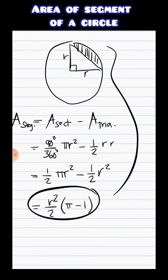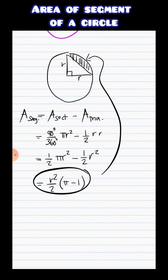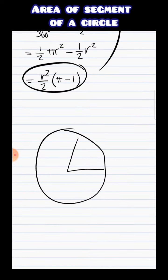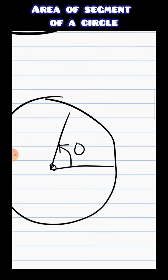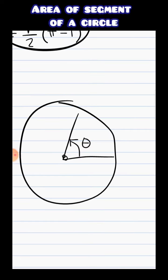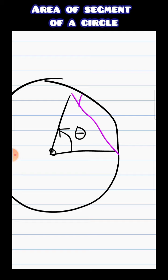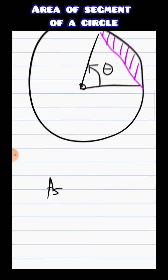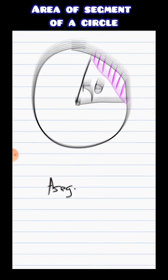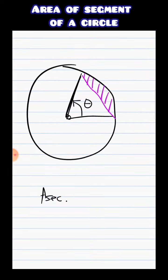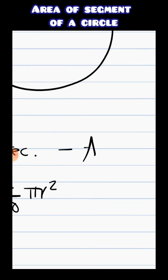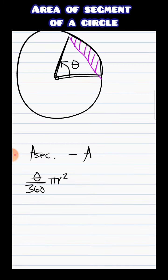This is the area of this segment right here. So just find the area of the sector and then subtract the triangle. Now, how about if we have a circle and a segment — or a sector — that has an angle not equal to 90 degrees, something like this one? How are we going to find this segment? Well, the first step is still to find the area of the sector: theta over 360 times πr². Then, same idea: subtract the area of the triangle.